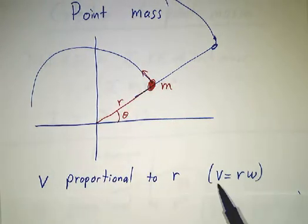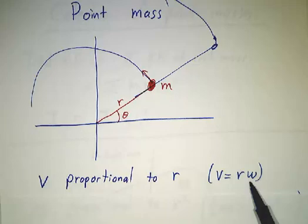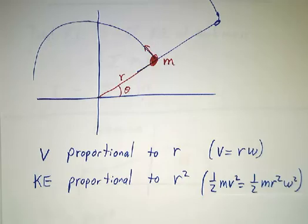So in fact, the velocity is equal to the distance times the angular velocity. And that means that our kinetic energy is proportional to r² because it is proportional to the velocity squared. Our kinetic energy is 1/2 mv², but v is rω, so that's 1/2 mr²ω².